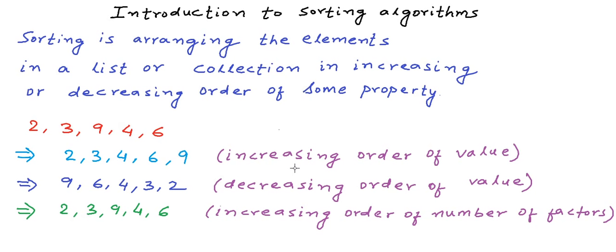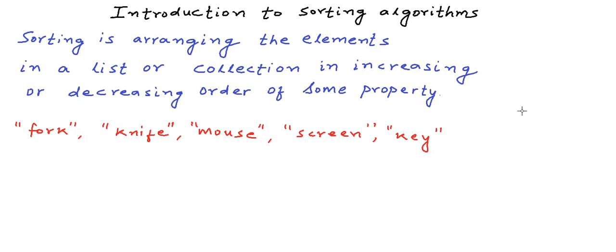Now this was a list of integers. We may have a list of any data type. We may want to sort a list of strings or words in lexicographical order, the order in which they will occur in dictionary. A list of strings like this in lexicographical order will be arranged in this order.